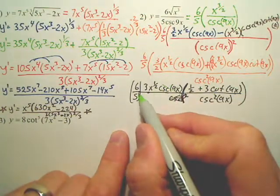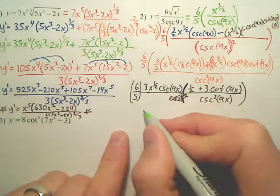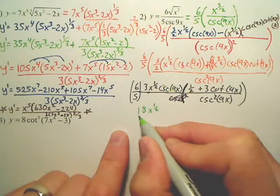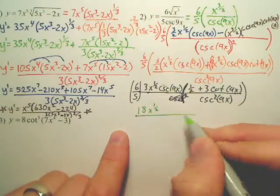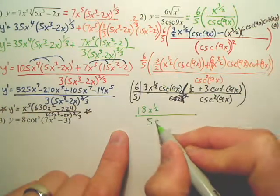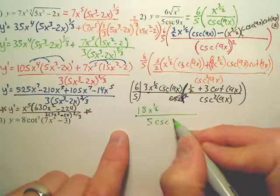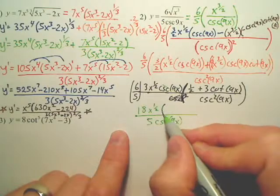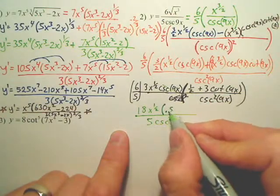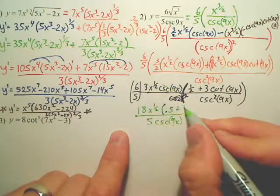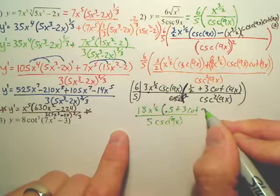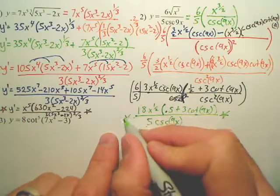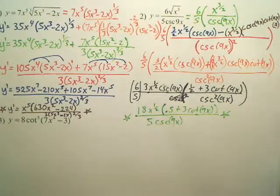Let's leave it as, let's see, the 6 times that. 6 times 3 is 18. X to the 1 half. Leave the 5 down here with a cosecant 9x.